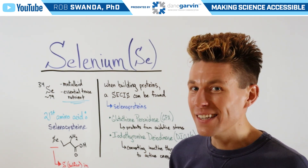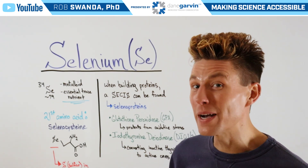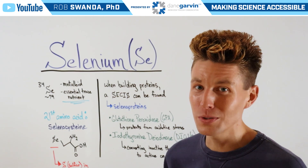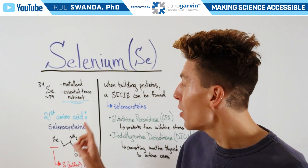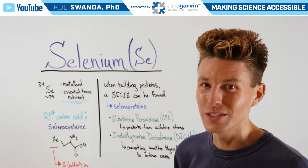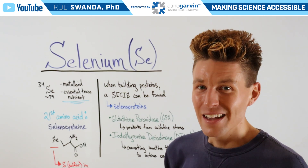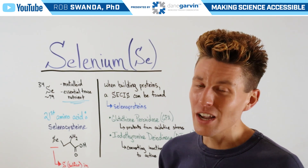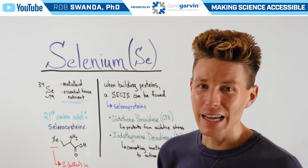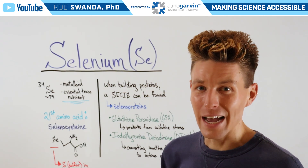So the next time someone tells you that there are only 20 amino acids in order to build proteins, make sure you tell them you know about the 21st amino acid known as selenocysteine. Make sure to stay connected to my channel and with Dane Garvin as we continue breaking down other scientific topics.